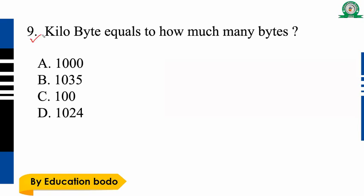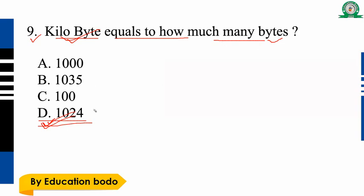Question number nine: 1 KB equals how many bytes? Option D is the right answer — 1024 bytes equals 1 kilobyte. So option D is the right answer.